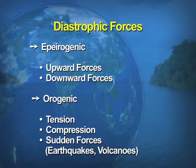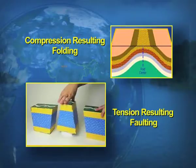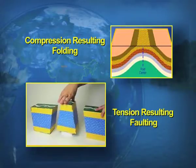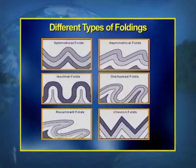Looking at the diagram: compression involves forces working from opposite directions, whereas tension is a vertical movement that divides rocks into different parts. Compression results in folding of rocks — the diagram is self-explanatory in showing how folding takes place. Tension, being a vertical movement, results in faulting, as shown in the diagram.